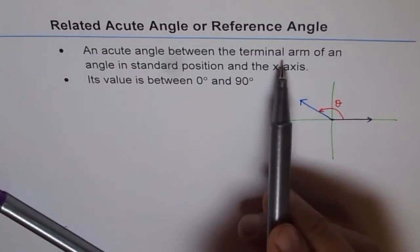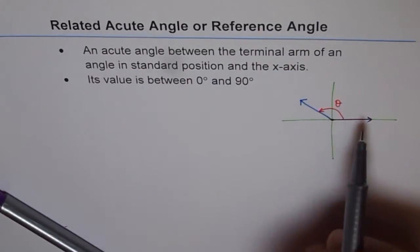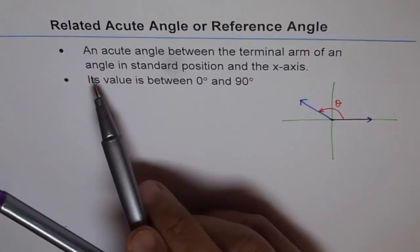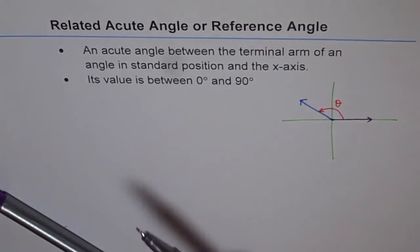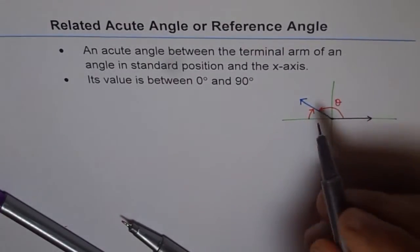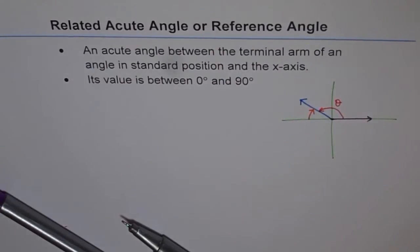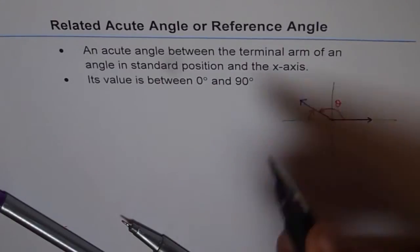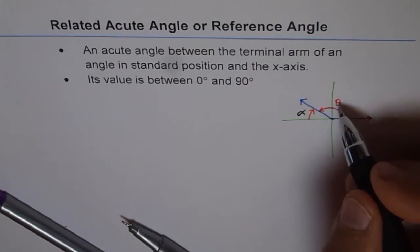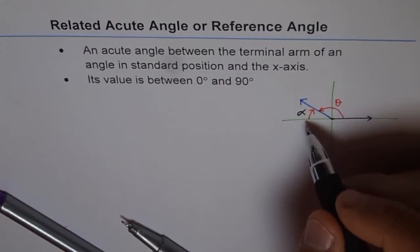An acute angle between the terminal arm of an angle in standard position and the x-axis — that angle is called the related acute angle. We will normally represent this angle with alpha. Some books will say theta dash, but I will represent it most of the time as alpha — alpha for acute.